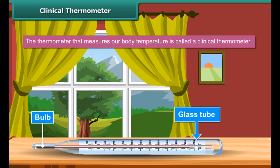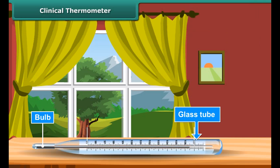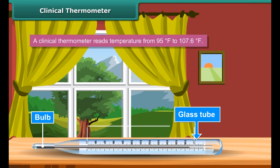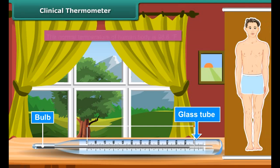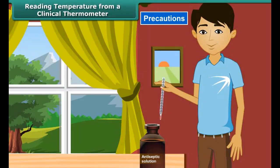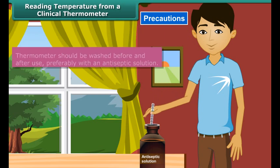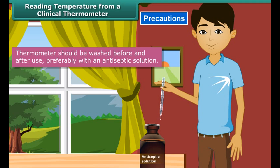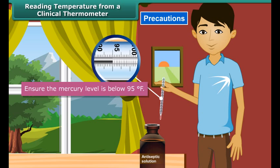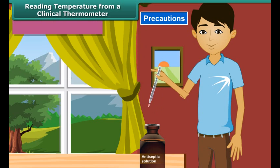A clinical thermometer consists of a long, narrow, uniform glass tube. It has a bulb at one end filled with mercury. Outside the bulb, a small shining thread of mercury can be seen. A clinical thermometer reads temperature from 95°F to 107.6°F. The normal temperature of the human body is 98.6°F. The clinical thermometer is also known as a doctor's thermometer.